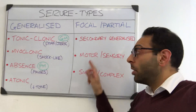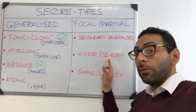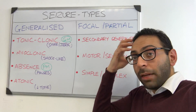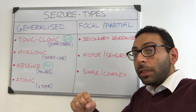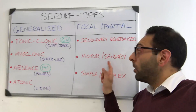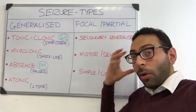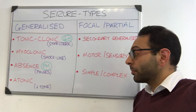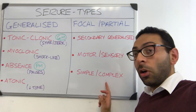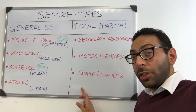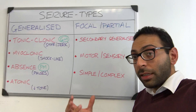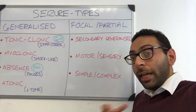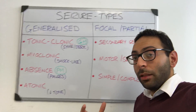You can split focal seizures into two types: motor versus sensory. Focal motor seizures affect one part of the brain and only affect motor functions like movements, while focal sensory seizures affect one part of the brain but only affect sensation. You can also split them into simple versus complex — a focal simple seizure is when you maintain consciousness, whereas a focal complex seizure involves impaired consciousness as well.